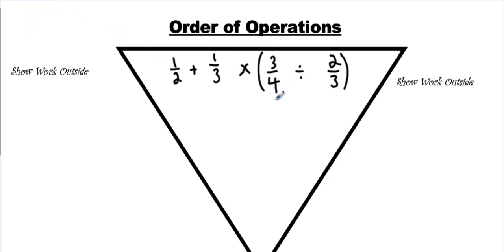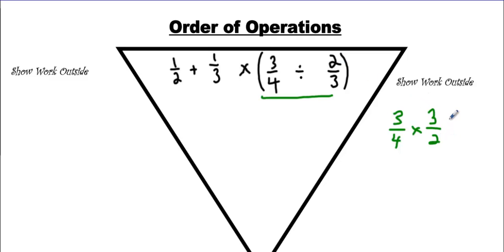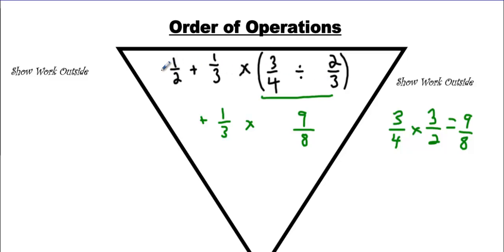BEDMAS — brackets first. So we're going to solve this on the side. We're going to go 3 fourths, change this to times, flip this around. That makes 9 over 8. Don't convert it to a mixed fraction yet — do that at the very last step. And then bring everything else down. Don't change the order. Some of you might want to change the order, thinking that's a good idea — you mess up the whole equation. Keep the numbers in the correct order.